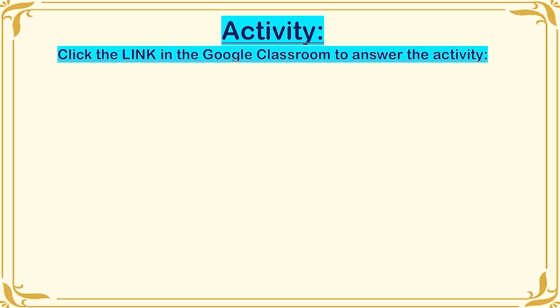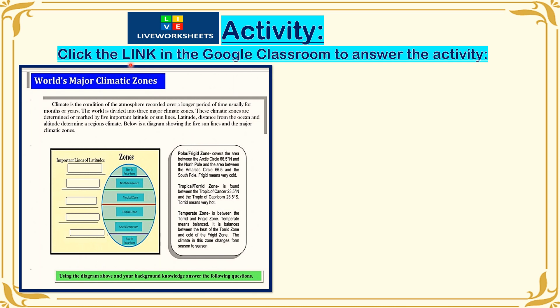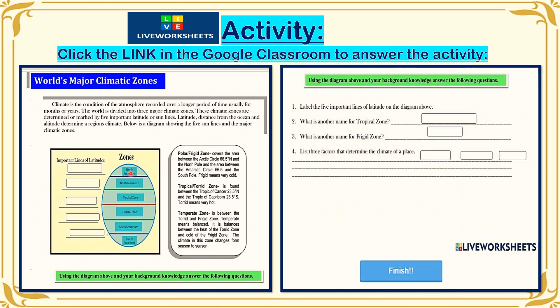For your activity, which is a live worksheet, I'm going to post the link in Google Classroom so that you can answer the activity. All you have to do is drag the words from the right to the left. Read the paragraph and answer questions number one, two, three, and four. Click Finish, then click Check My Answers — your scores will appear. Screenshot and upload to the Social Studies album in your line group. Thank you so much and good luck.